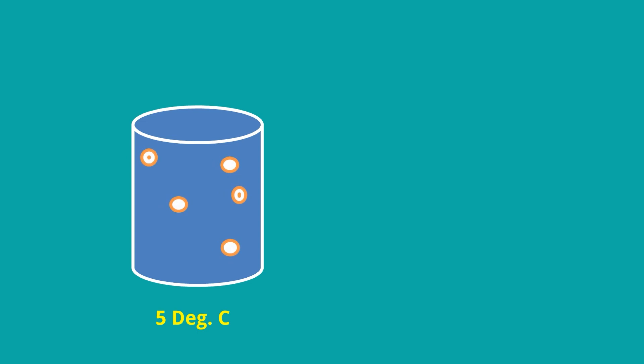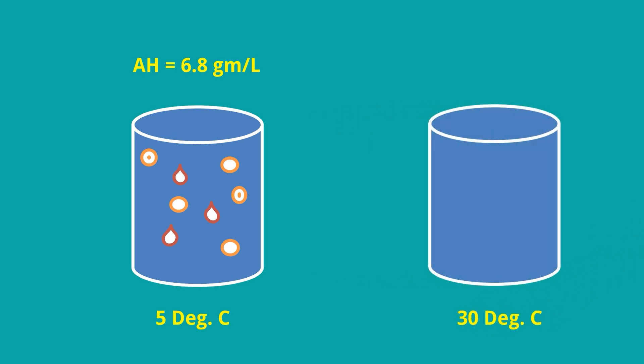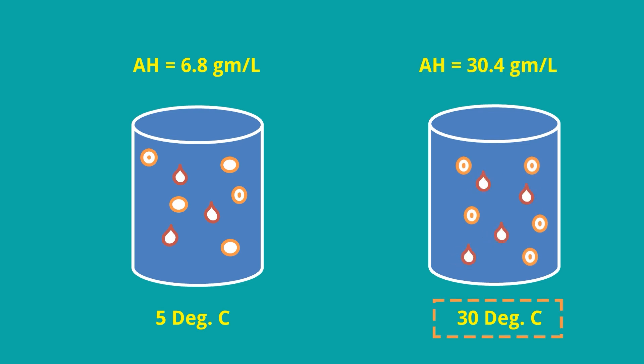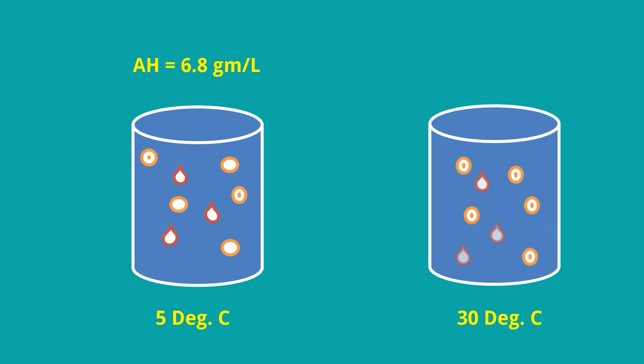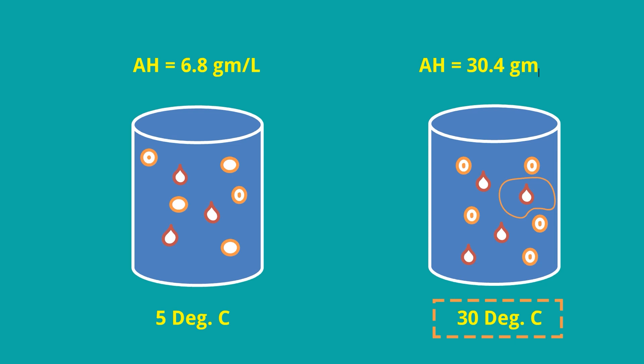Suppose on one day the temperature is 5 degrees centigrade and the absolute humidity is 6.8 grams per liter, and on another day the temperature is 30 degrees centigrade and the absolute humidity is 30.4 grams per liter. As temperature increases, the space between the gas molecules increases and that space is filled by moisture content, so air is able to hold more moisture and absolute humidity also increases.